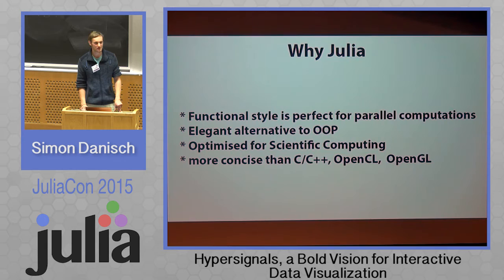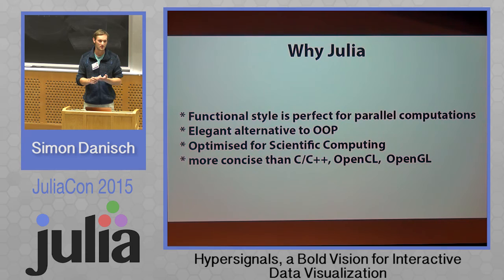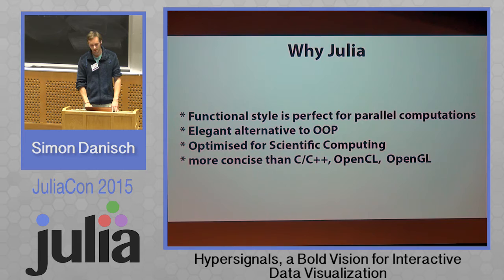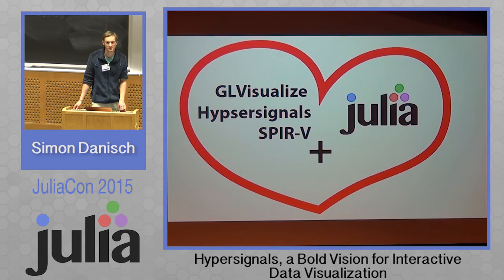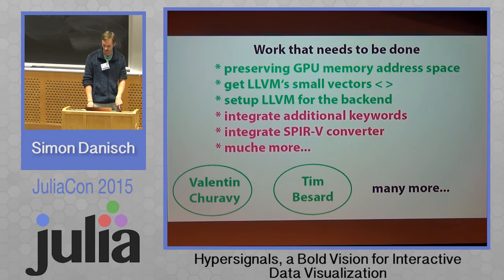Julia is optimized for scientific computing, and in scientific computing you need a lot of visualizations. If you have simulations of magnetic fields or similar, you want to visualize them, and because many of these probably run on the GPU already, you want to visualize that data while staying on the GPU. With all these use cases, we're already prepared for this kind of work, and Julia is obviously more concise than low-level OpenGL code. I think we're looking forward to a very nice platform for 3D visualizations together with SPIR-V, Julia, HyperSignals, and GeoVisualize — it will enable a lot of cool use cases.